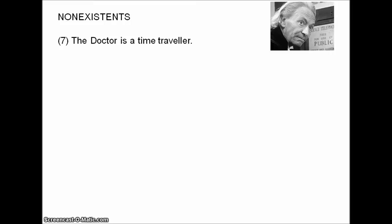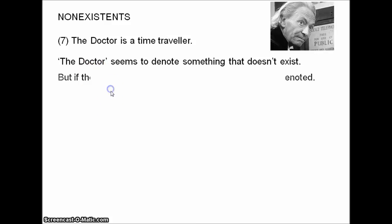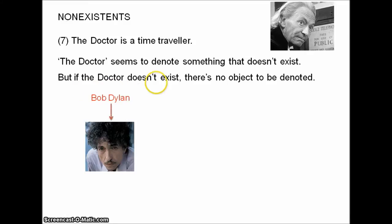Third problem: non-existent objects. How about 'the doctor is a time traveller, a wanderer in the fourth dimension'? The problem here is obvious. This is a simple subject-predicate sentence which seems to be true. We have our singular term, 'the doctor', and we've noted that these seem to work by denoting something, referring to something, picking something out. So 'the doctor' seems to denote something that doesn't exist. But if the doctor doesn't exist, in what sense can he be denoted? In what sense can he be referred to? There's no object to be denoted — the attempt at referring fails. There is no doctor. Bob Dylan denotes Bob Dylan — the doctor denotes what? The name 'the doctor' is an empty term. What it purports to refer to doesn't exist. The problem can be seen more clearly by considering whether this sentence is true or false.